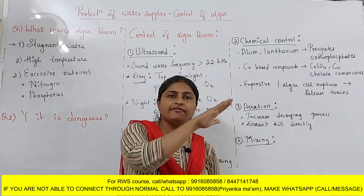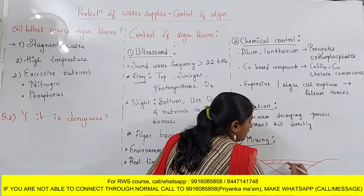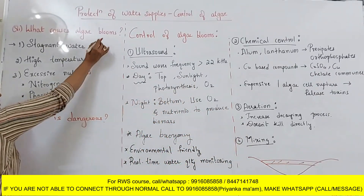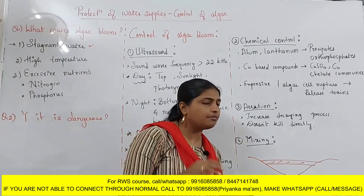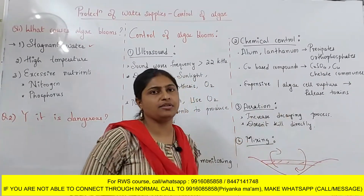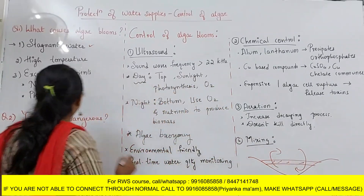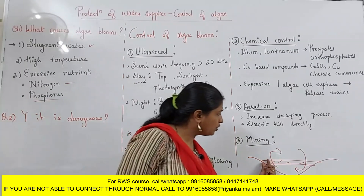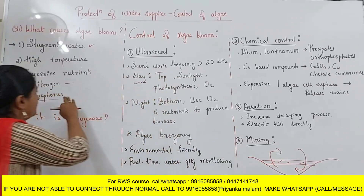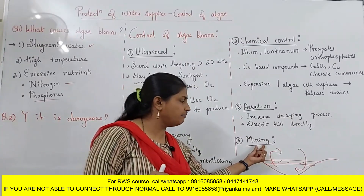The next is the mixing method. You have studied the different stratification layers in a pond — epilimnion, hypolimnion, and other layers. In lakes, during summer and winter, these layers get disturbed. By this process, whatever nutrients are present get redistributed through water movement, making less food available for the growth of algae. Doing this artificially is known as the mixing process.